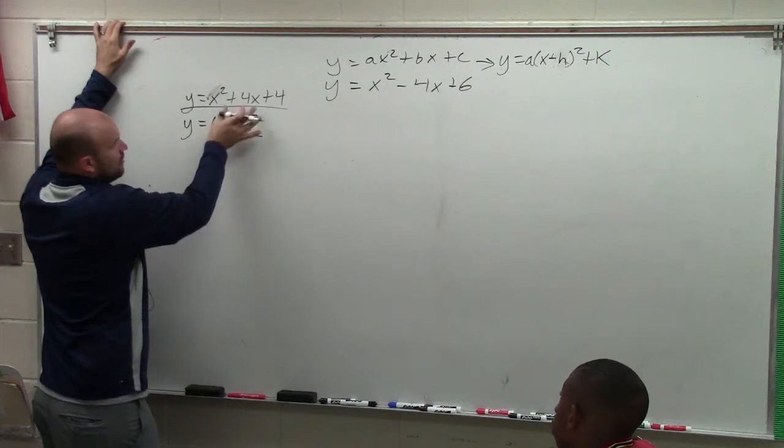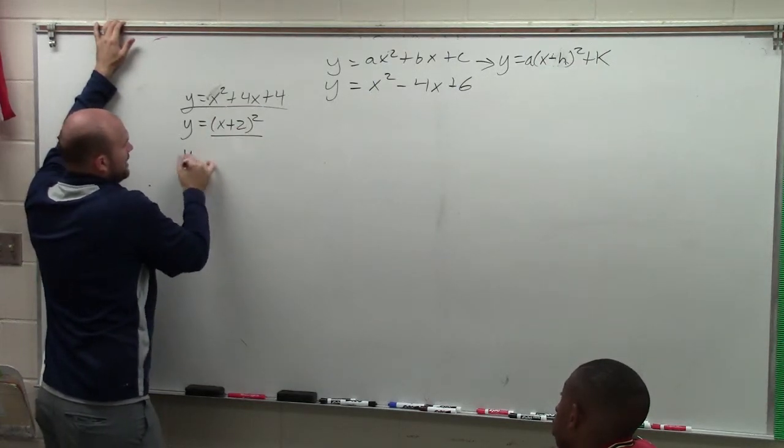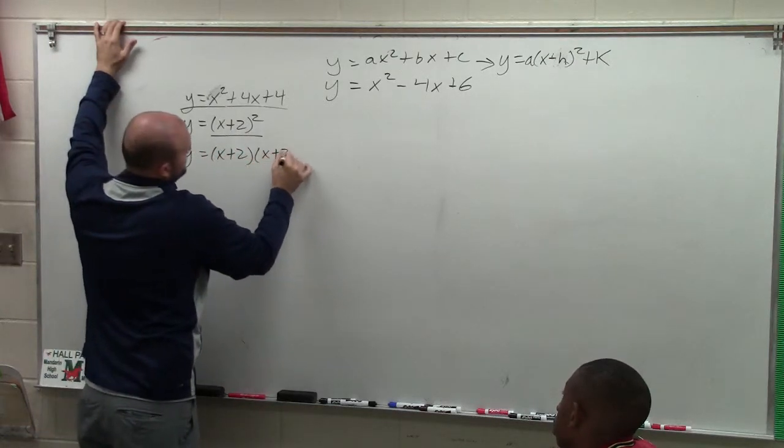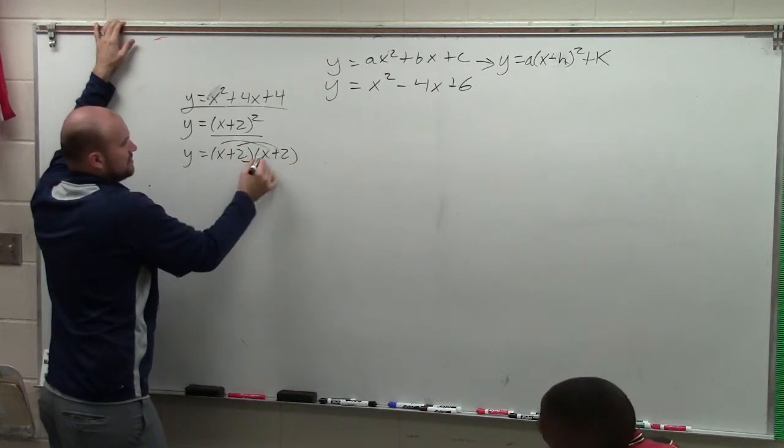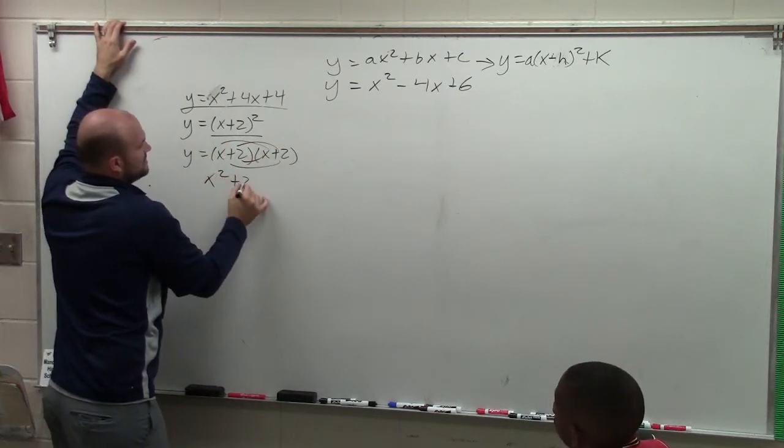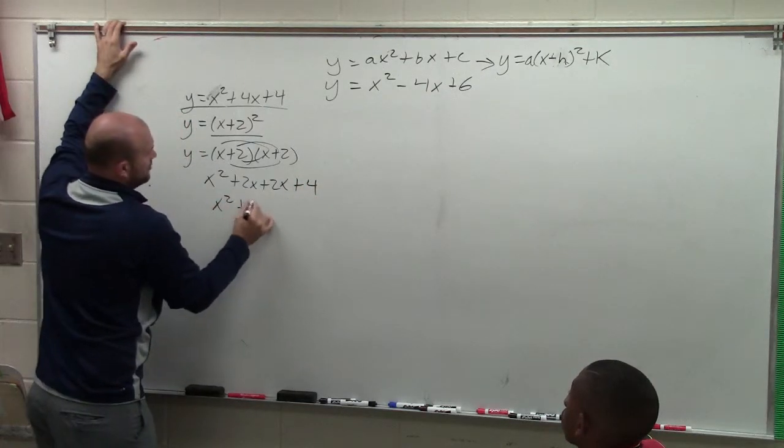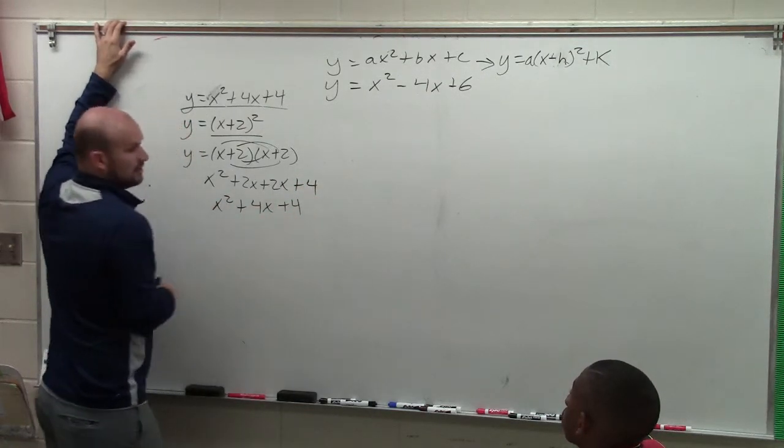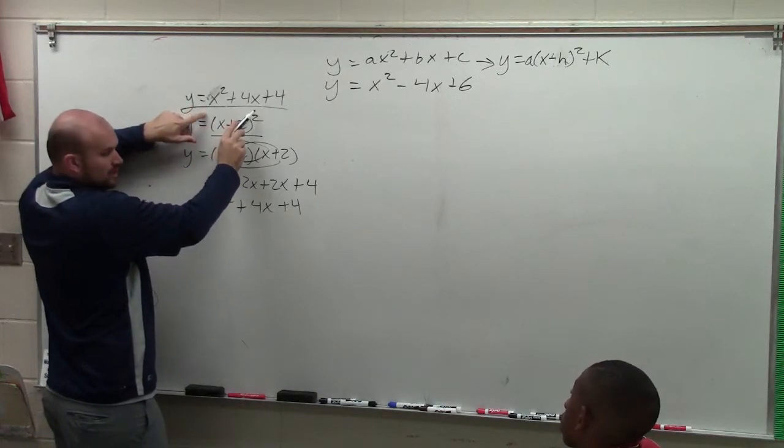Now, think about this. So when I'm looking at this, I can factor this to (x plus 2)² because y equals (x plus 2) times (x plus 2), which is (x plus 2)², right? Now, notice when I FOIL this, I get x² plus 2x plus 2x plus 4, which is x² plus 4x plus 4. So the product of a binomial squared is a perfect square trinomial.